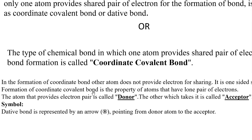The atom that provides the electron pair is called the donor atom, and the atom that accepts it is called the acceptor atom. A dative bond is represented by an arrow sign, where the head of the arrow points to the acceptor and the tail represents the donor.